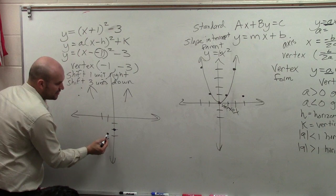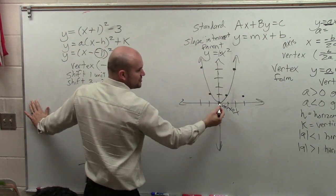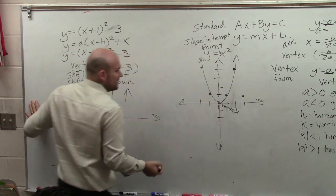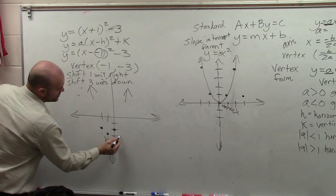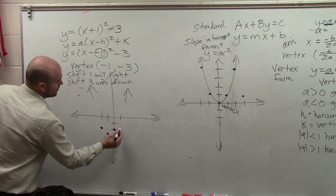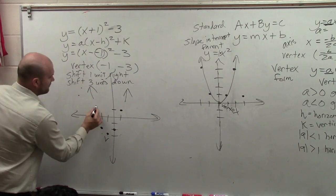And I can do it in the other direction. Over 1, up 1. Because that's the nice thing about that axis symmetry. Over 1, up 1. Over 1, up 1. Then I go over 2, up 4. Over 2, up 4. 1, 2, 3, 4. Over 2, up 4.